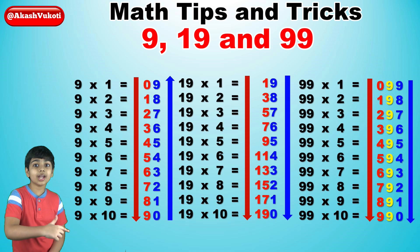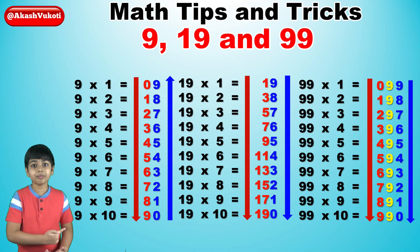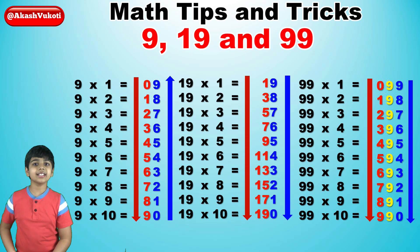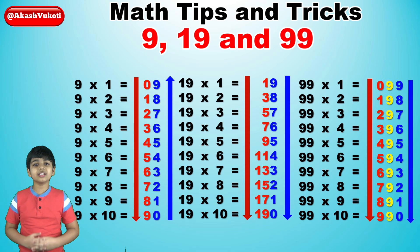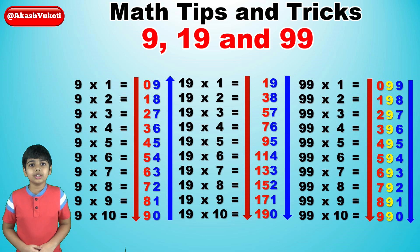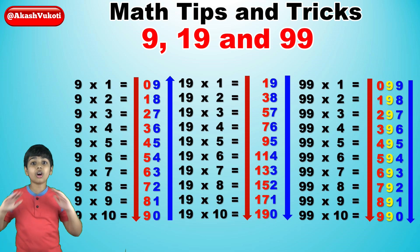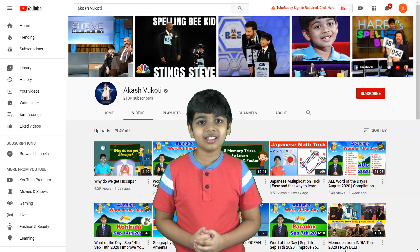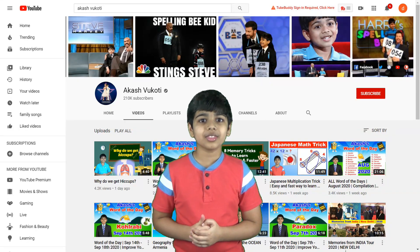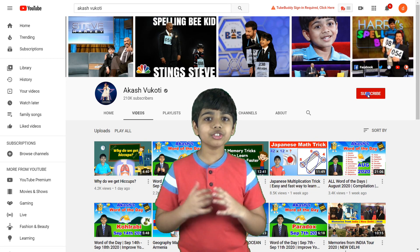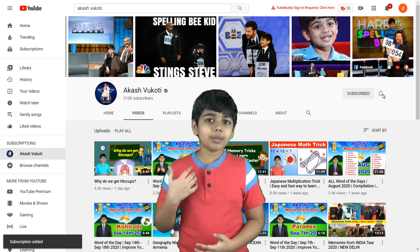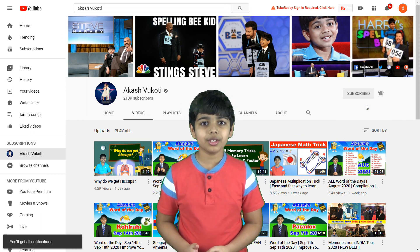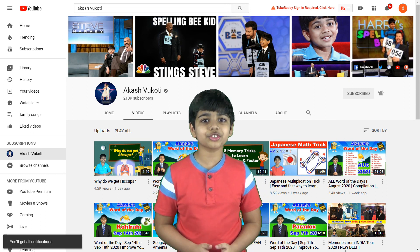And now you have the 99 times table. All three of these times tables — 9, 19, and 99 — they're all related, they're super easy to learn, which means you can master all of them super easily and super quickly. Thanks so much for watching this video. If you like my videos, then make sure to subscribe and don't forget to click the bell icon so you don't miss my new videos every time I upload. Thanks so much for watching!